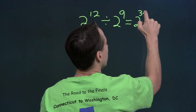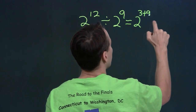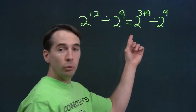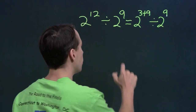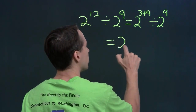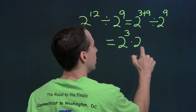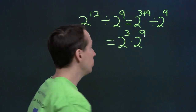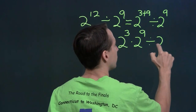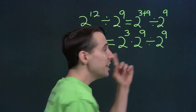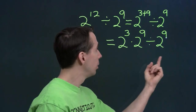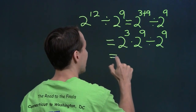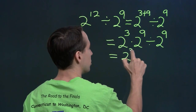I'm going to break up two to the twelfth — break that twelve into a three and a nine. This is two to the three plus nine, and three plus nine is just twelve. So that's two cubed times two to the ninth, using the rule we just discovered for multiplying two numbers with the same base. And now this is something we can handle: two to the ninth divided by two to the ninth is just one, so this goes away, and we're left with two to the third.